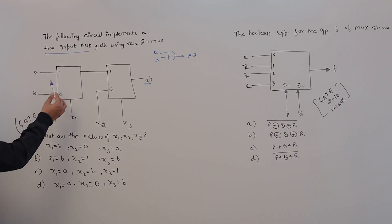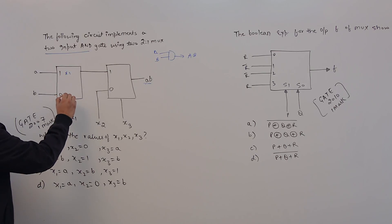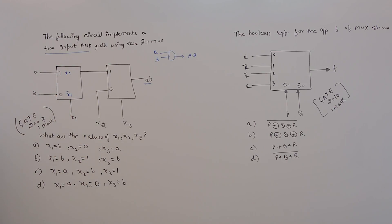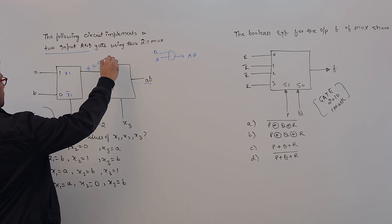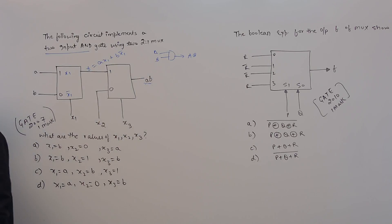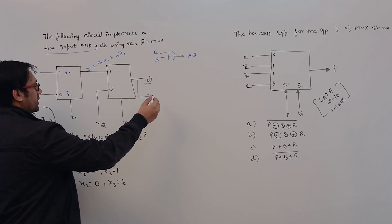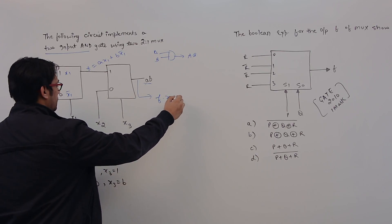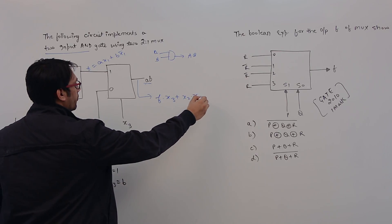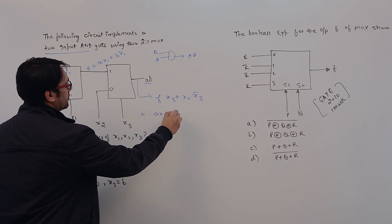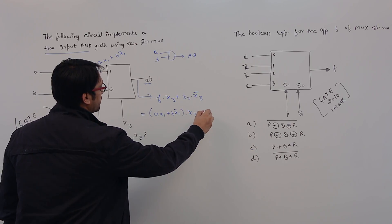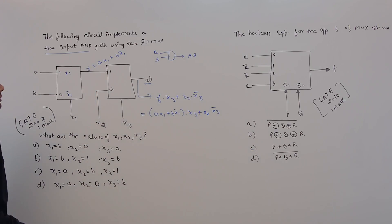Here, 1 is representing x1 and 0 is representing x1 complement. So if this multiplexer gives a function F, then F can be represented as A·x1 + B·x1'. Now checking the output, this output is representing F·x3 + x2·x3'. Substituting F, it can be written as (A·x1 + B·x1')·x3 + x2·x3'.